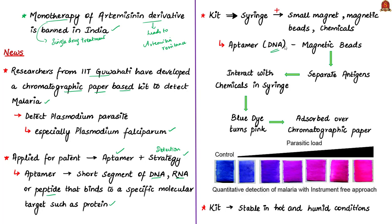Using an ordinary syringe fitted with a small magnet, magnetic beads and a few chemicals inside, the researchers were able to specifically capture the antigen released by the parasites in the blood of malaria patients. As blood has many interfering agents, the researchers used magnetic bead-tethered aptamers consisting of two small DNA molecules. These aptamers capture only the specific antigens from the malarial parasite strains and separate them from the blood serum. The magnetic bead helps in holding the aptamers. Note that chromatographic paper is used to separate colored chemicals or substances.